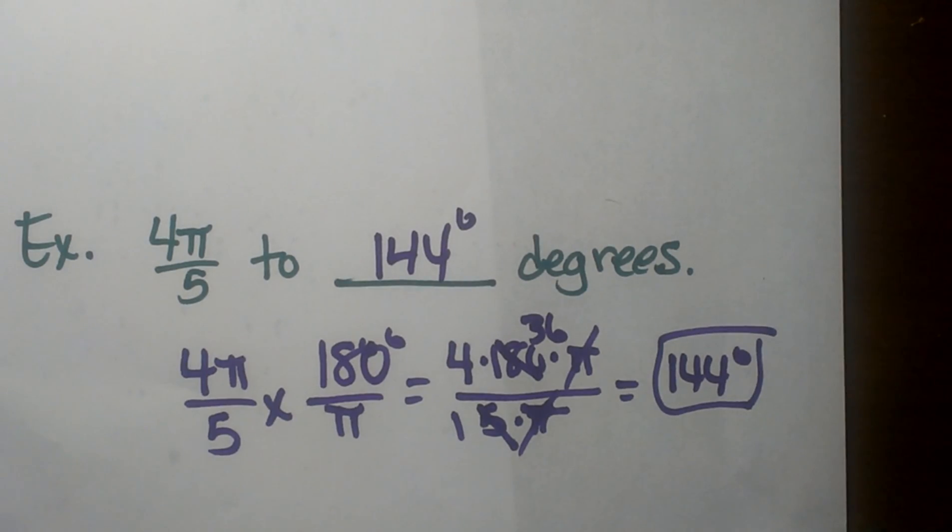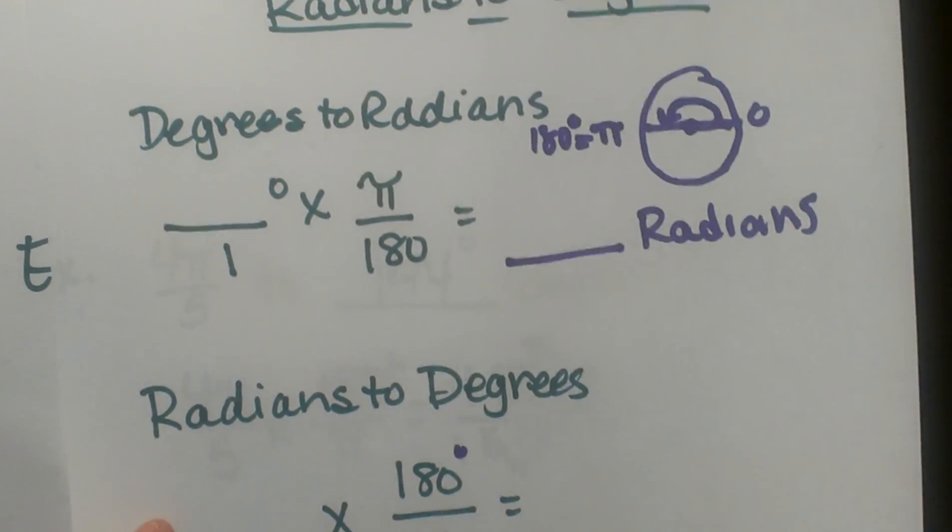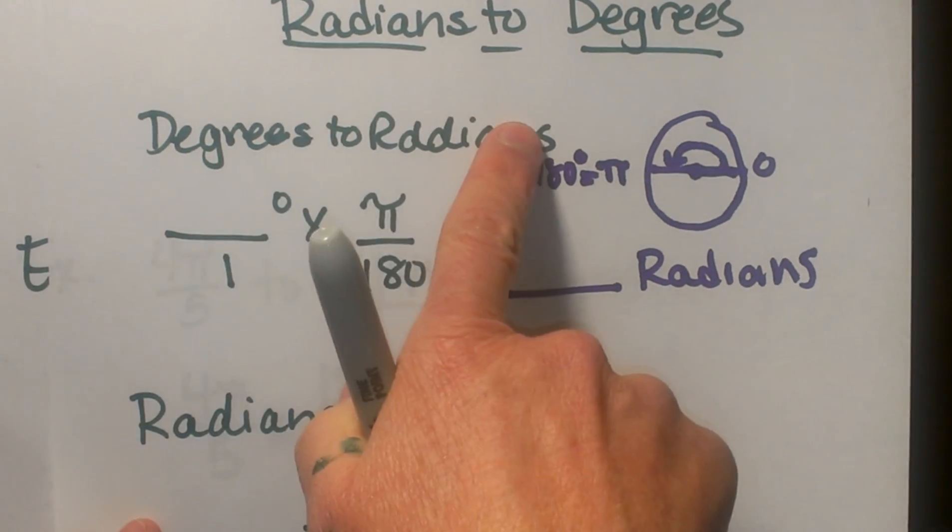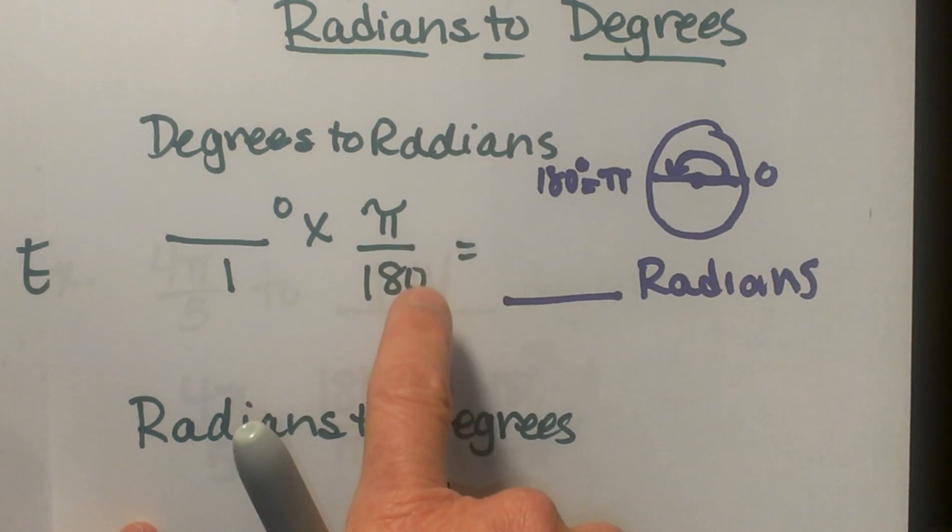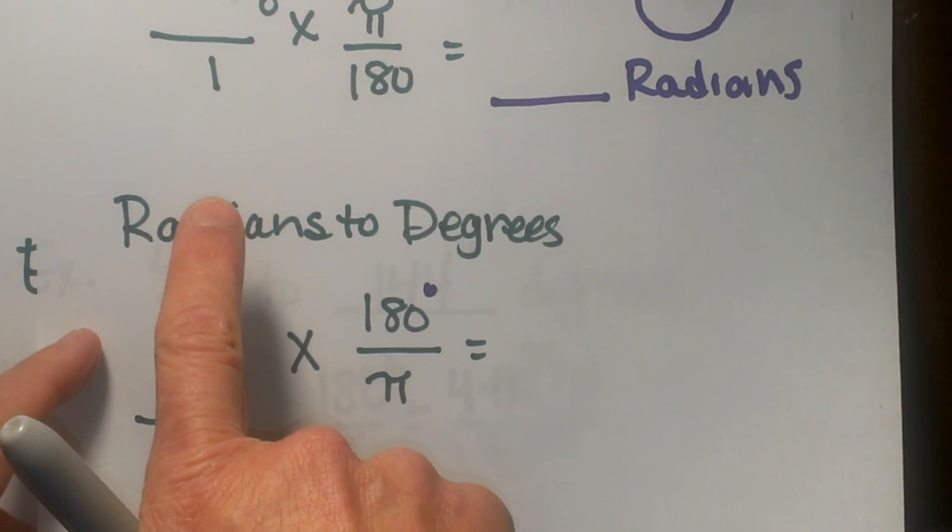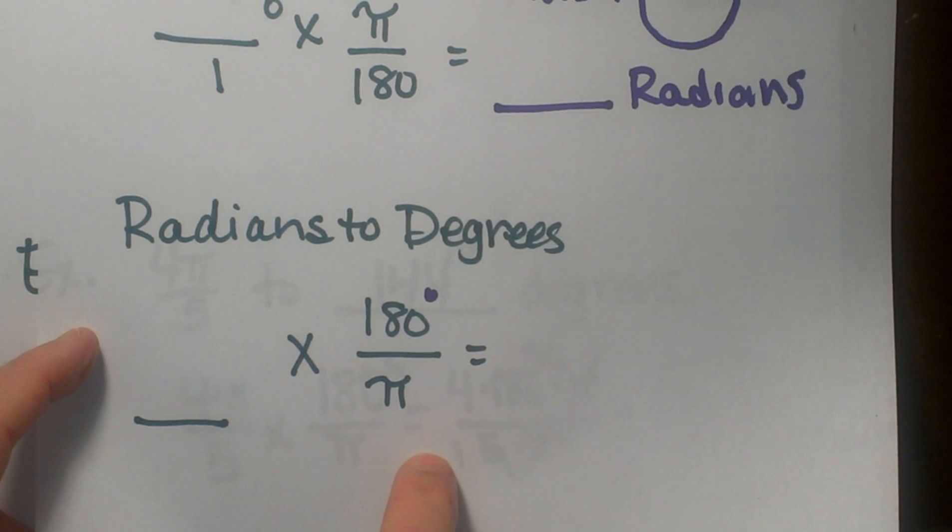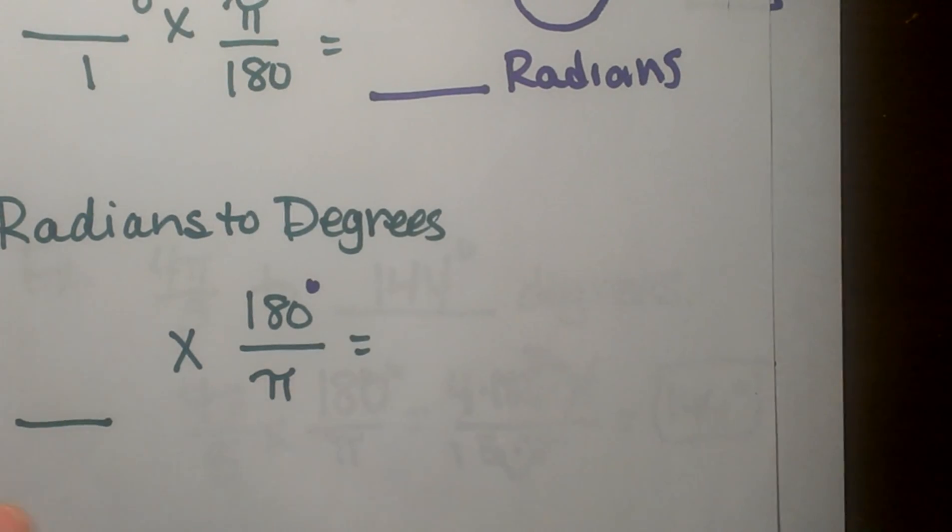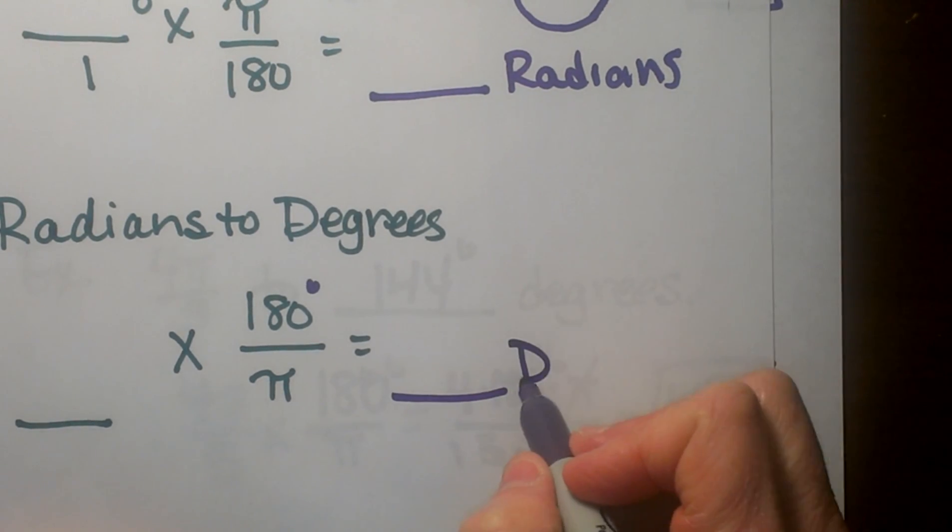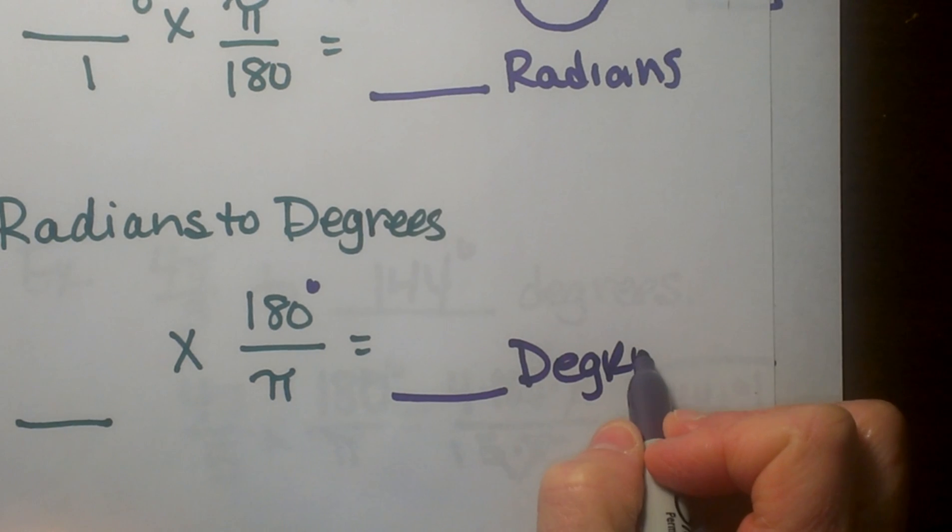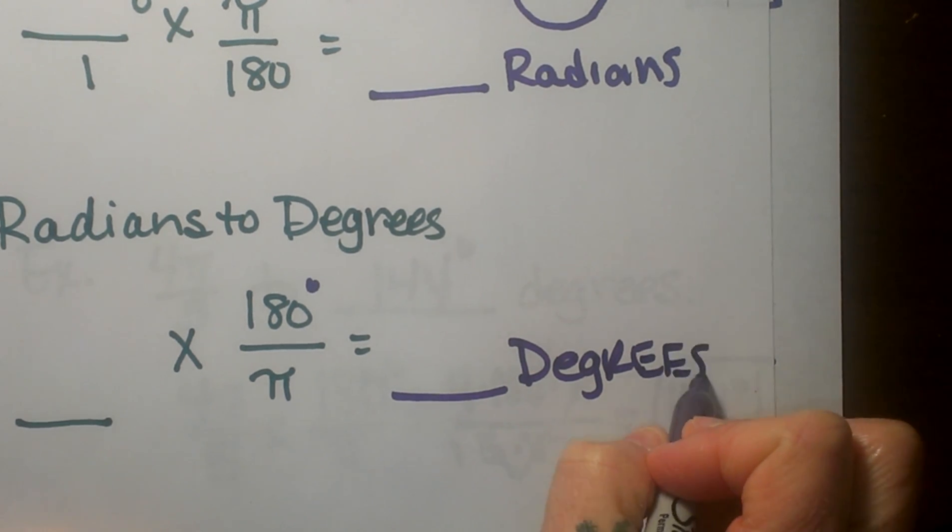So let's go back and review real quickly. The two formulas are this: if you're going from degrees to radians, you're going to multiply by π over 180. If you're going from radians to degrees, you're going to multiply by 180 over π. And your answer down here will be in degrees, and your answer at the top will be in radians.